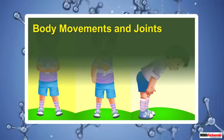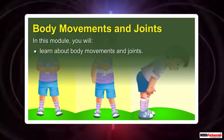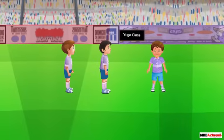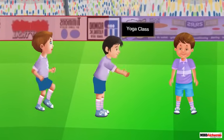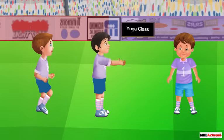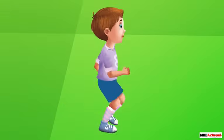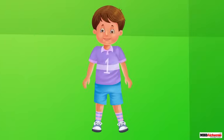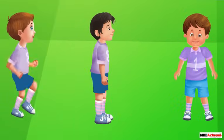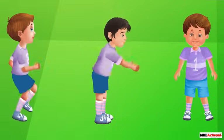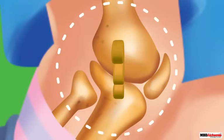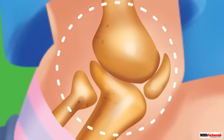In this module you will learn about body movements and joints. You do different exercises in your yoga classes at school. For doing these exercises you do different types of movements, for example moving your arms and legs forward, bending, shoulder rotation, and many more. You can do these movements easily because your body is flexible. Such flexibility in our body is due to the presence of joints.